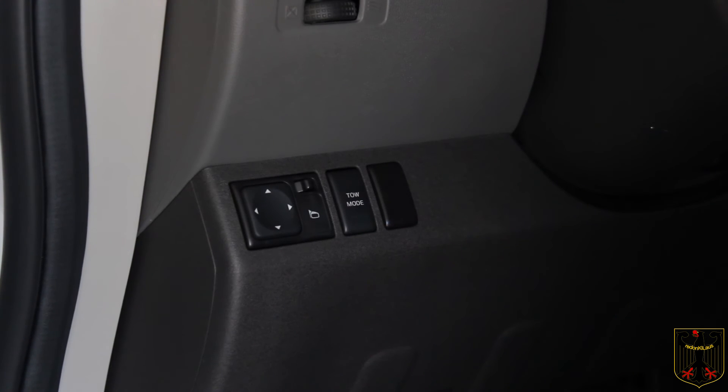But basically when I push the momentary contact on the tow mode it activates a latching relay which puts a ground and gives me a ground over to the Stillen piggyback. When I push it again it releases that ground and just leaves it open circuit. So I believe that's the way it's supposed to work with the Stillen unit.